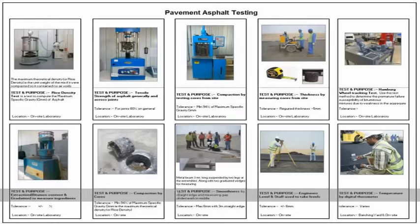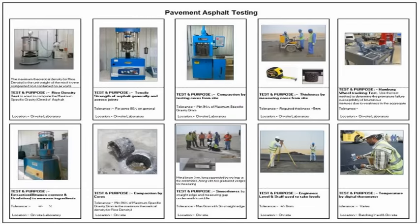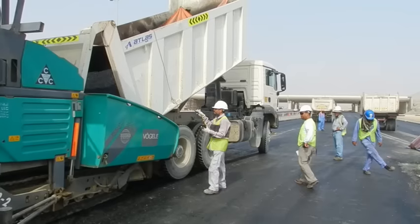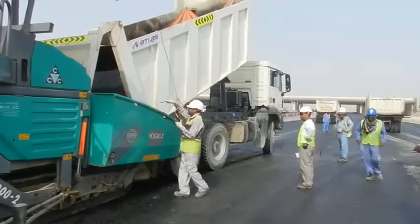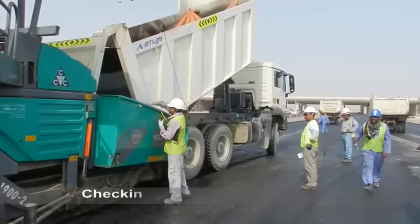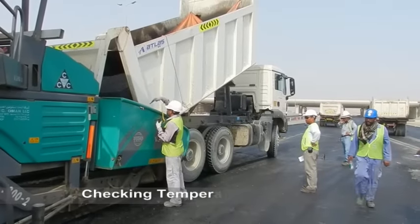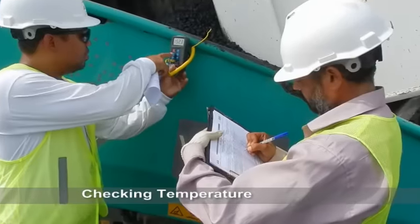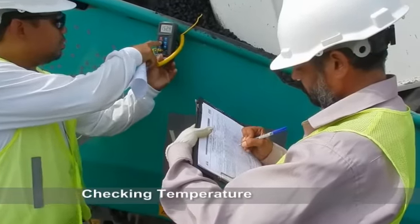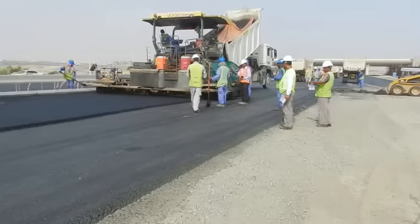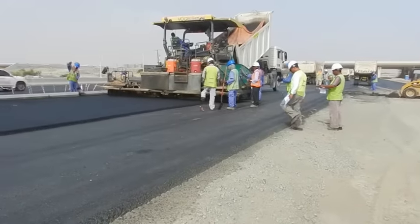A set of augers spreads the asphalt mix across the front of the screed, and the screed then levels and slightly compacts the asphalt. The screed uses string lines or matching shoes for level control.